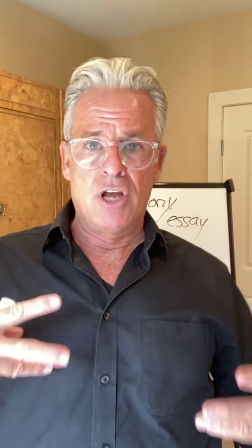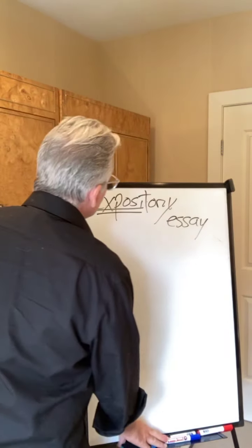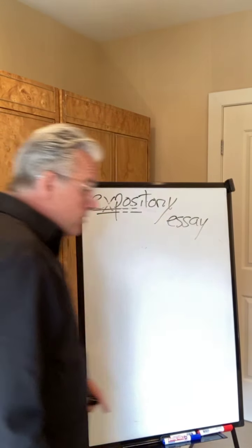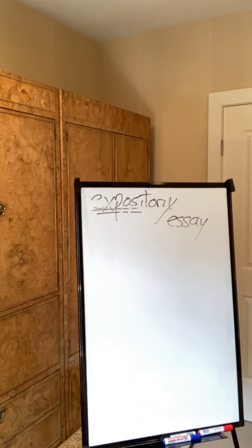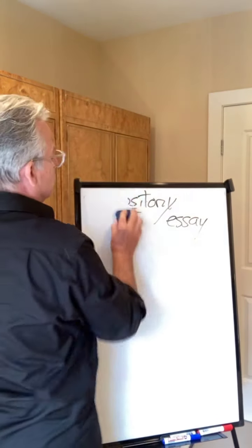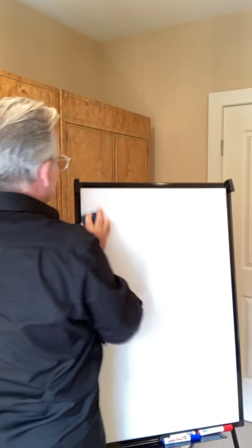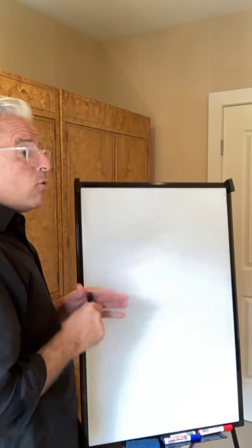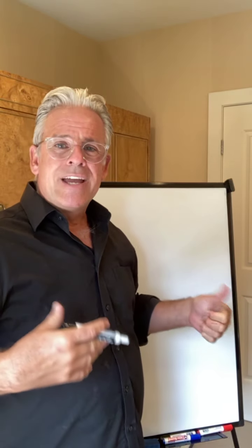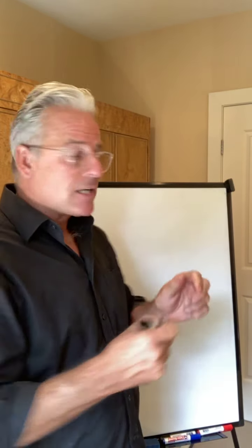We're going to use our family stories as the middle parts of a new essay shape called an essay of abstract definition. This is technical terminology. A narrative essay of abstract definition — all that means is that we're using a story, a narrative, to define an abstract idea. We will be using a story to explain and define an abstract idea.